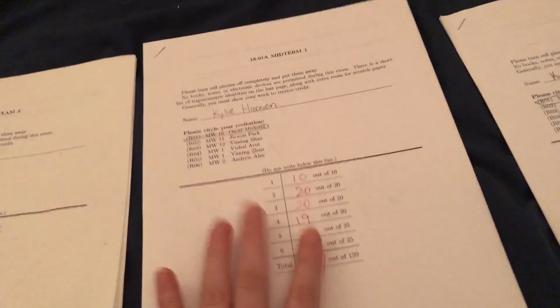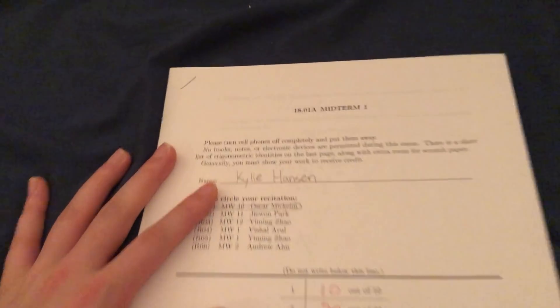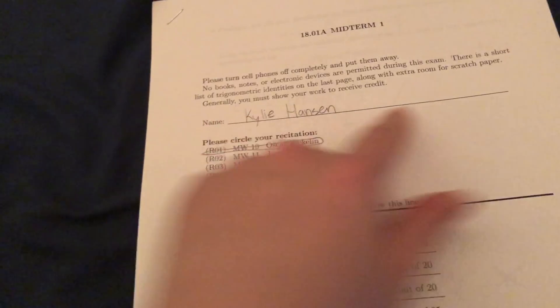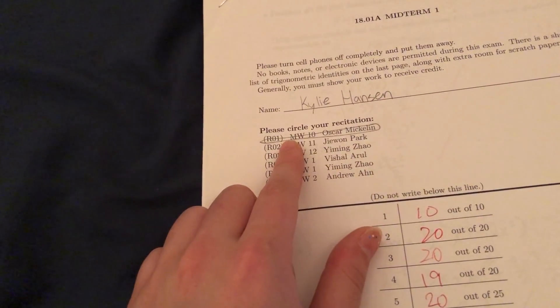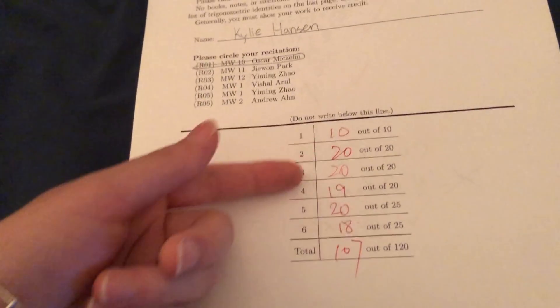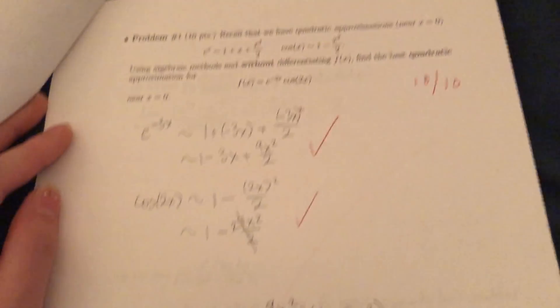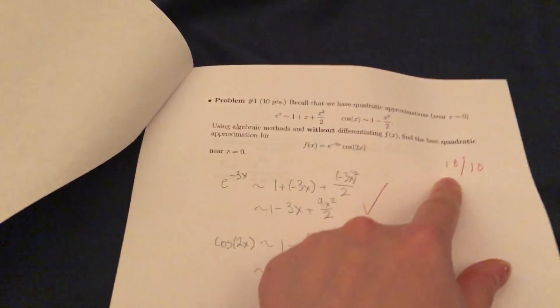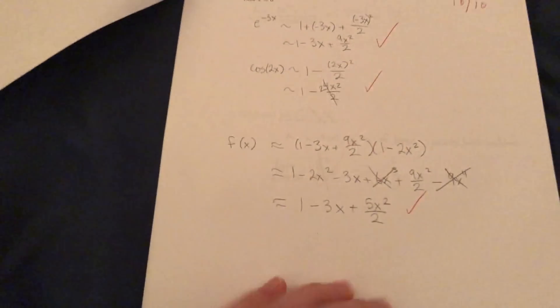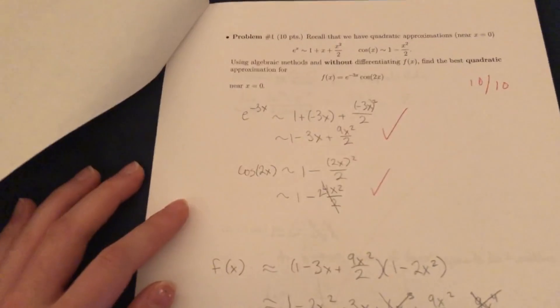So without further ado, let's get started. Okay, so let's start off with this midterm first. All of the tests look the same on the front. They have the instructions, you put your name, you circle your recitation. I was in Oscar's recitation, he was a really good recitation leader, and they have the section for the graders. So if you take a look, problem one says it's some approximation problem. I got full points on this problem actually, woo! That doesn't happen very often. You're supposed to show your work so that they can give partial credit. Usually classes at MIT give lots of partial credit. So I usually try and show my work. They give checkmarks usually.